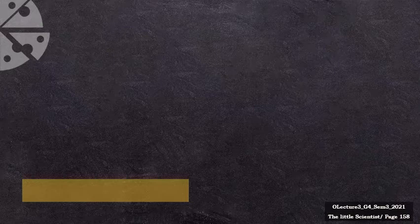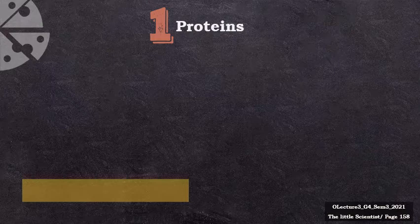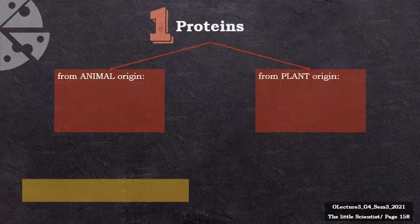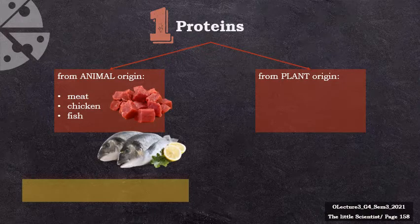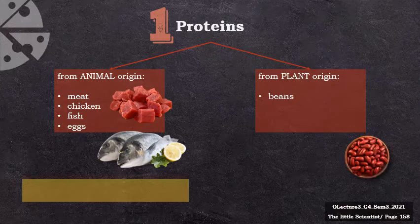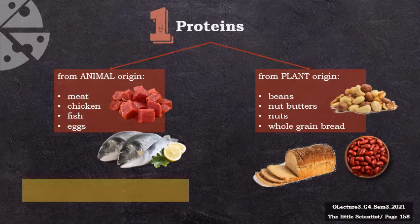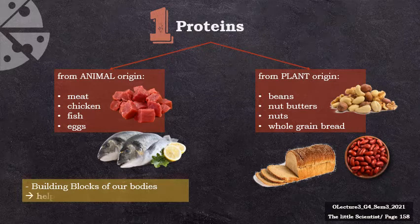Some of the food you eat is used as building materials — here are the proteins. People can get the protein they need from animals or plants such as meat, chicken, fish, eggs, beans, nut butters, nuts, and whole grain bread. Proteins are important since they are the building blocks that grow and repair your body tissues such as muscles, hair, bones, and skin.